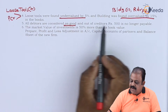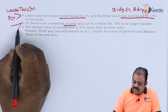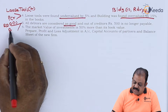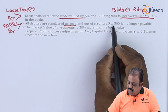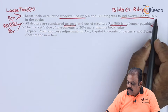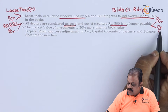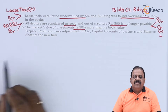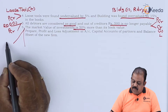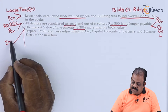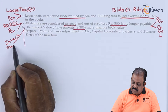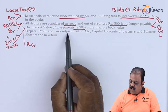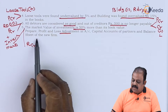All debtors are considered good, so there is no need for RDD. We have to reduce the entire amount of RDD, with the second effect being a credit to the profit and loss adjustment account. Creditors of 500 are no longer payable, so credit the profit and loss adjustment account and reduce creditors by 500. The market value of investments is 50% more than book value, so we add that amount to investments, with the second effect being a credit to the revaluation account.